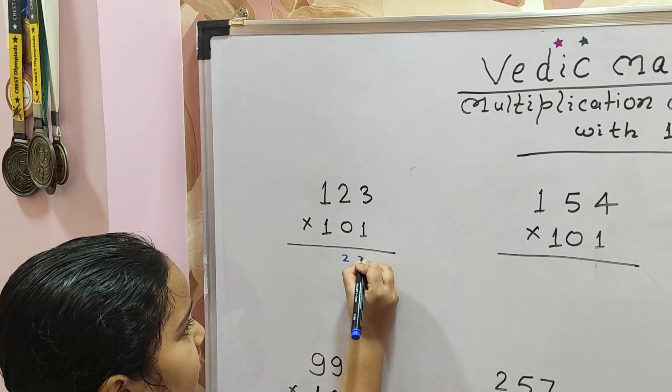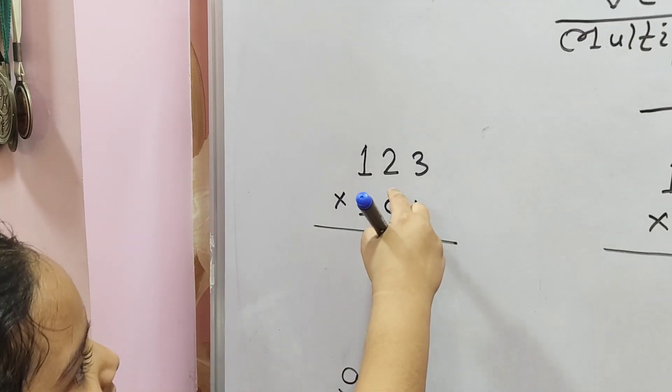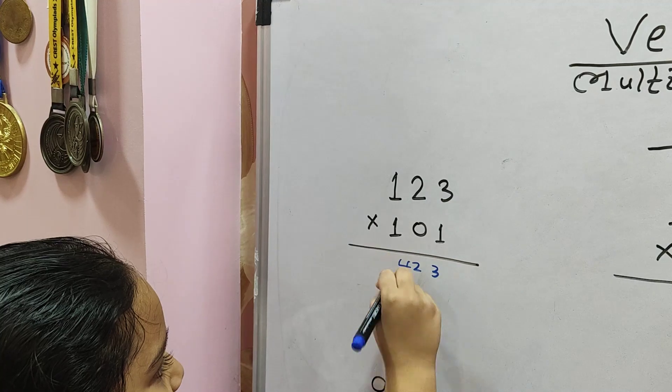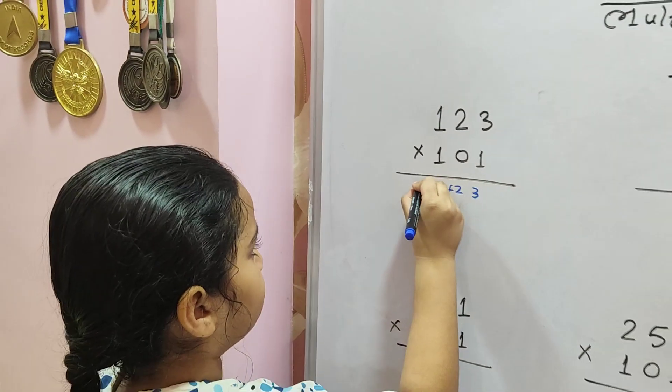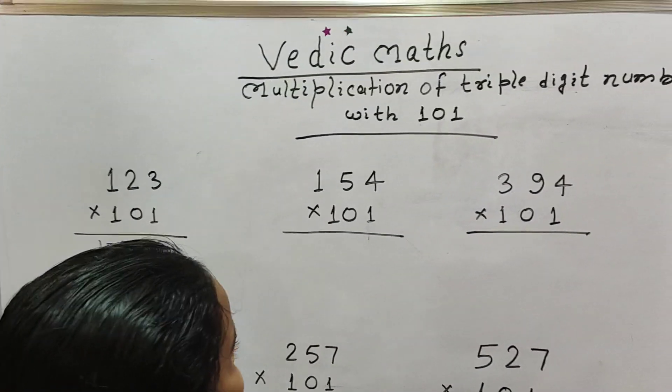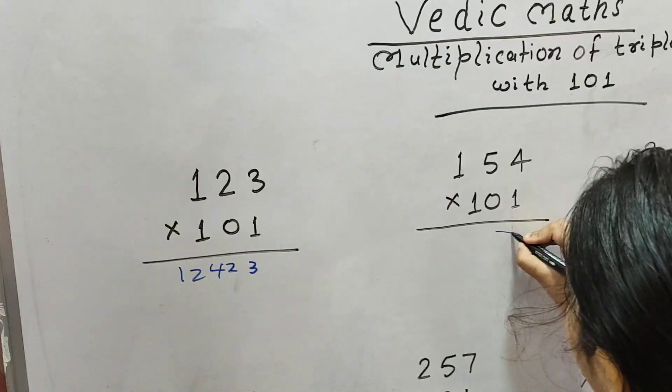First we'll take the right two digit number, which is 23. Then 1 plus 3 is 4, then 4. Then we'll take the left two digits, which is 12. Answer is ready! The same way with others. Now we have to take...